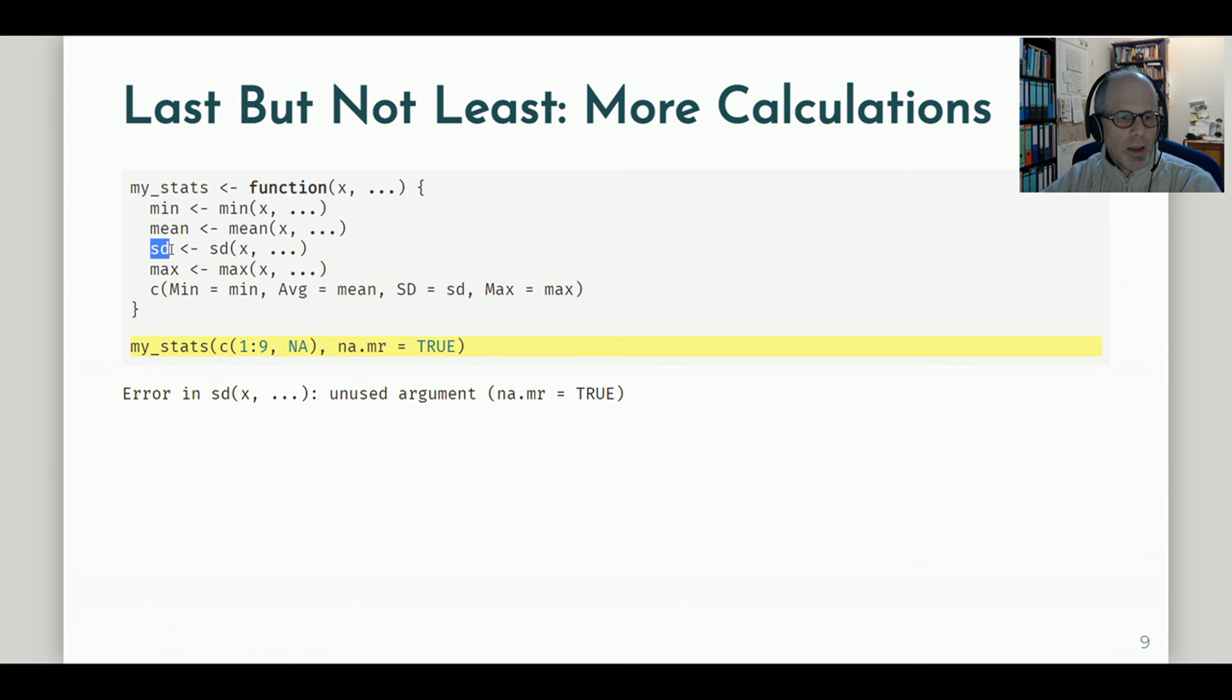And again, I use it with a typo in the na.rm argument. Using the three dots, I still get an error message back now, even though I use the three dots, we could say. And now we could think about the error message.